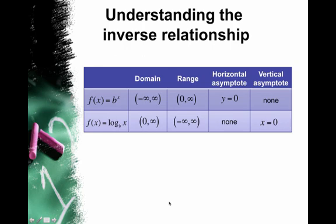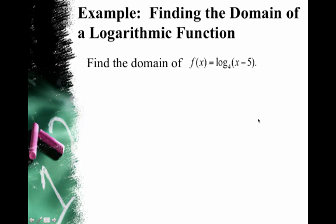Here's a summary table for you guys so you can see and understand the inverse relationship, how the domain and range flip from exponential to logarithmic functions as well as how the horizontal asymptote becomes a vertical asymptote for logarithmic functions.